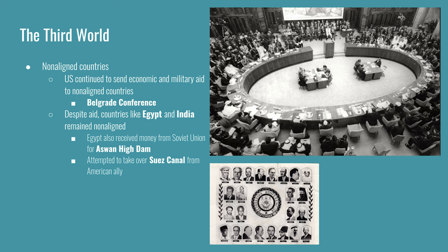The United States continued to send economic and military aid to these non-aligned countries, often without strings attached, to generate goodwill toward the West. They sent money to Egypt and India, yet despite that, those countries remained unaligned. Sometimes countries like Egypt played both sides in their non-alignment — Egypt received money from the Soviet Union to construct the Aswan High Dam at the same time they were receiving aid from the US.